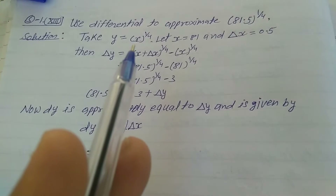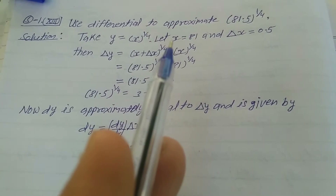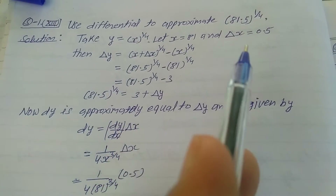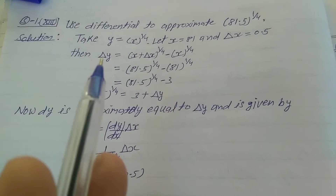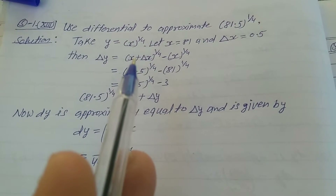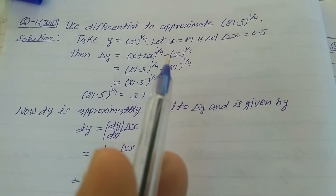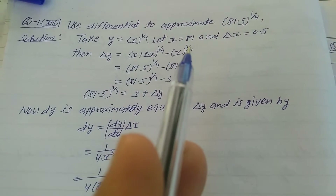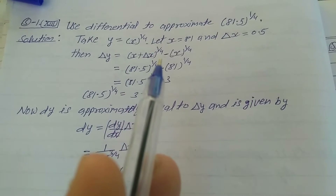Solution: Take y = x^(1/4). Let x = 81 and delta x = 0.5. Then delta y = (x + delta x)^(1/4) minus x^(1/4).